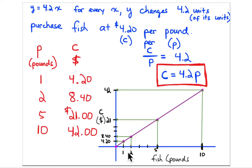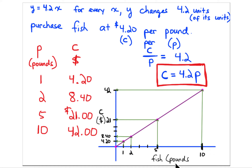Now look at the graph. Because it's a proportional relationship, the slope triangle is going to be right up against the origin (0, 0). You need to label the x-axis — that's pounds of fish. You need to go out to 10 pounds, so label this 10 and divide it into equal parts, making each part one unit: one pound, two pounds, five pounds, ten pounds.